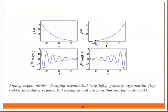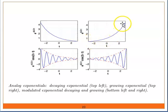For analog exponentials, the top-left diagram shows a decaying exponential — it is going down. The top-right shows a growing exponential — it is going up. The bottom-left shows a modulated exponential that is decaying, while the bottom-right shows a modulated exponential that is growing. Please read more on why modulation and demodulation is needed, and try to find out the application of it.